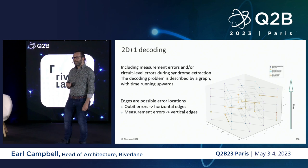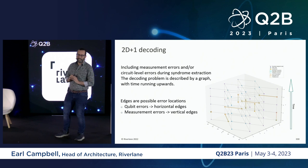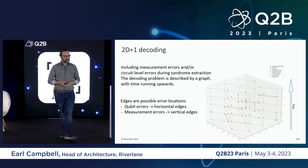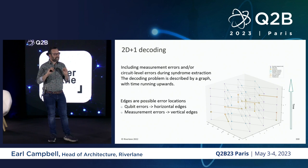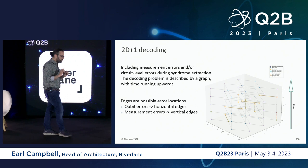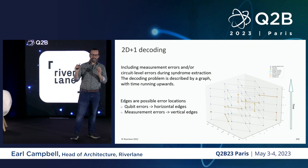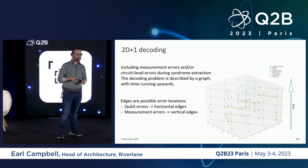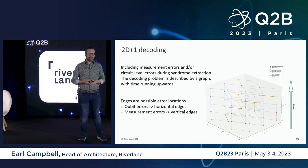If we include the possibility of measurement errors, we end up with a graph problem like the one illustrated here. Every horizontal edge is a possible qubit error, and every vertical edge is a possible measurement error. If you've got an orange edge, that means that error actually happened. The highlighted vertices — the endpoints — are the flags that the controller of the quantum computer observes. So you're given a graph and a set of vertices, and you've got to find a set of paths connecting these vertices using the smallest possible weight. This is a really hard computational problem. I haven't highlighted hypergraph errors here, but everything I say will carry over to that setting.